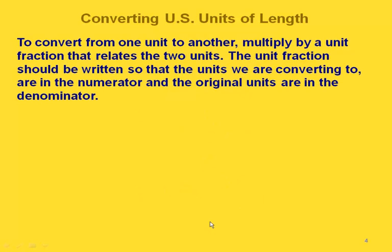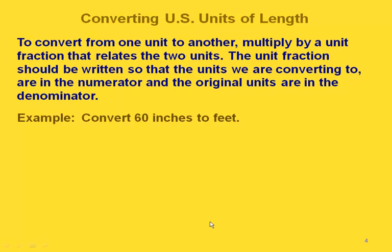To use these unit fractions, when converting from one unit to another, we multiply by a unit fraction that relates the two units we're converting. The unit fraction we use should be written so that the units we're converting to are in the numerator and the original units are in the denominator. Here's an example — let's say we want to convert 60 inches to feet.